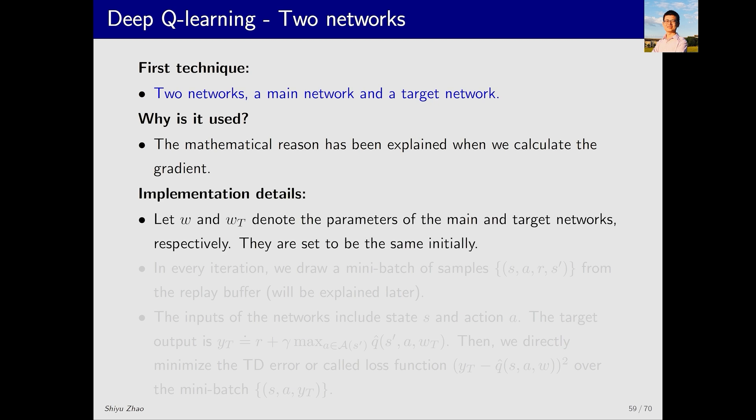Let's go through the details of the implementation. The first point is that W is the parameter of the main network, and W_T is the parameter of the target network. Initially, the two parameters are identical. In each iteration, I take samples from a replay buffer. What is a replay buffer? It's a set that contains many experienced samples. I'll explain this replay buffer in more detail shortly. From the replay buffer, I take some samples and use them for training. How to train?